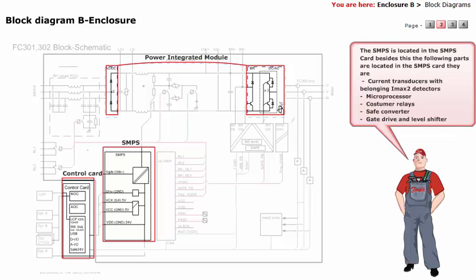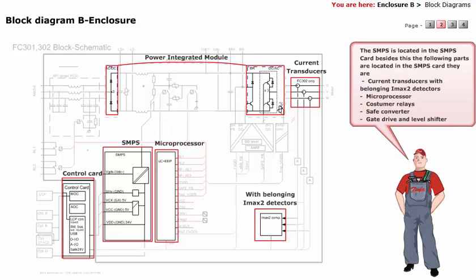Besides this, the following parts are also located in the SMPS card: current transducers with belonging IMAX 2 detectors, microprocessor, customer relays, safe converter, gate drive, and level shifter.